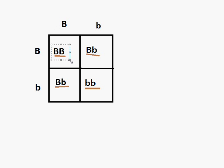So what this would be is homozygous brown, heterozygous brown, heterozygous brown, and homozygous recessive. You can either say dominant or blue.